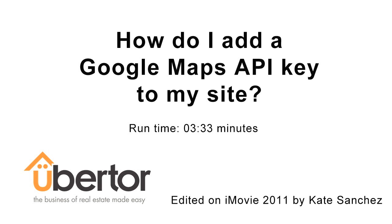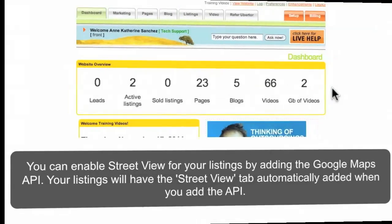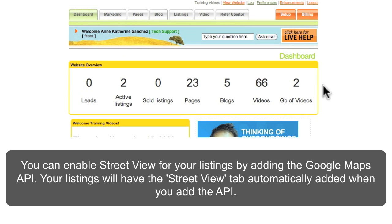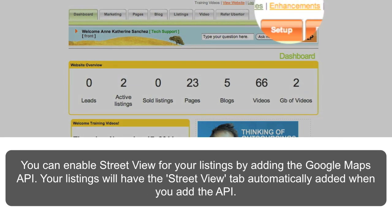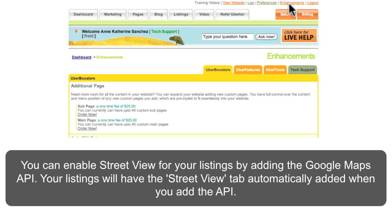How do I enable Street View for my listings? You can enable Street View for your listings by adding the Google Maps API. Your listings will have the Street View tab automatically added when you add the API.